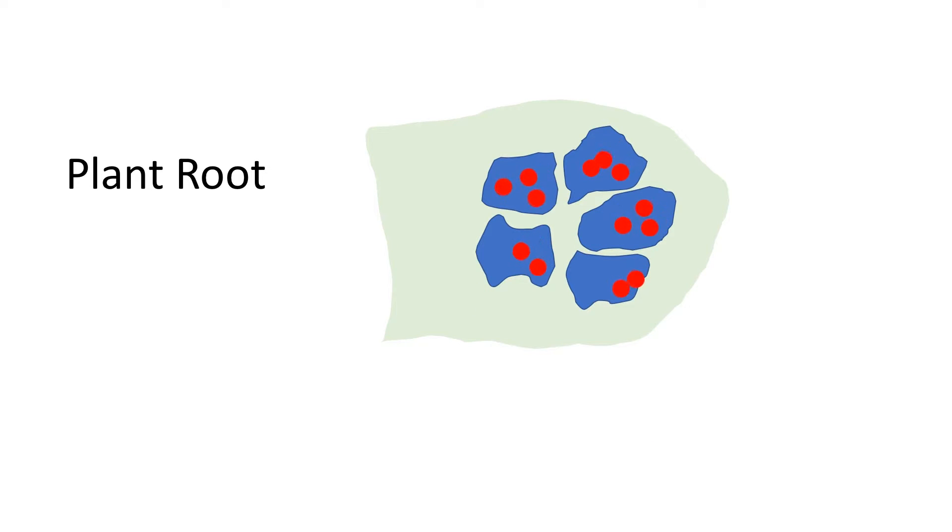When a plant is knocked over, the particles sink down to the bottom of the cells due to gravity. This movement is sensed by the plant, which then responds by growing its roots in the new direction of gravity.